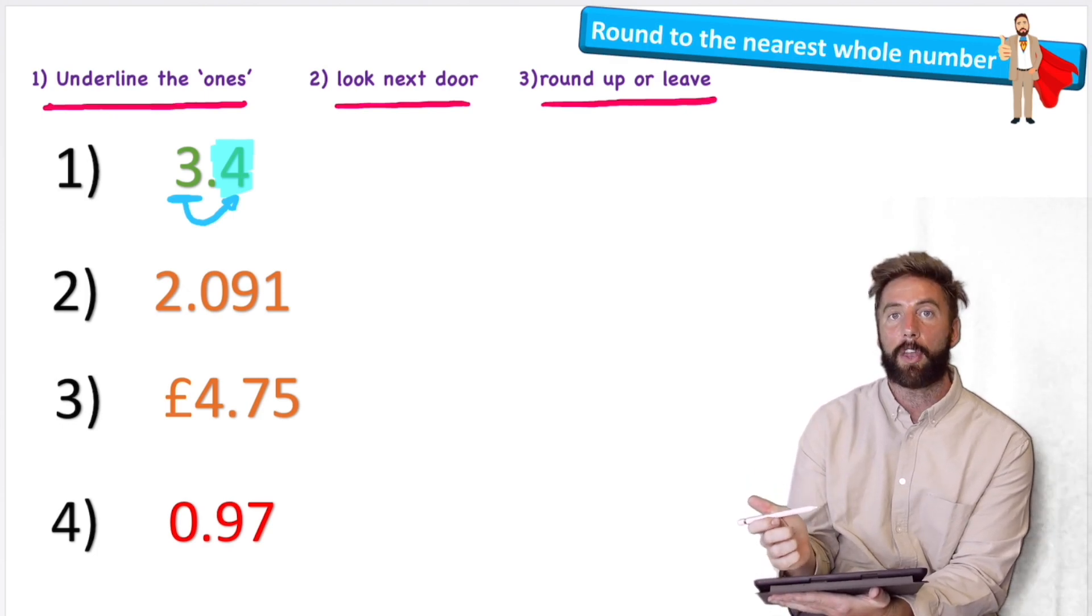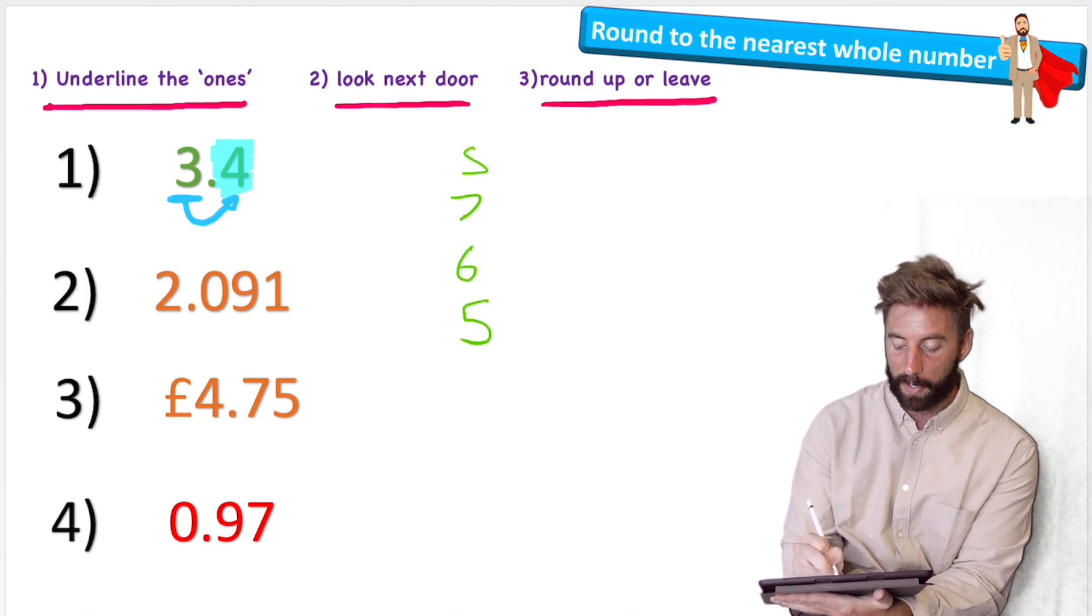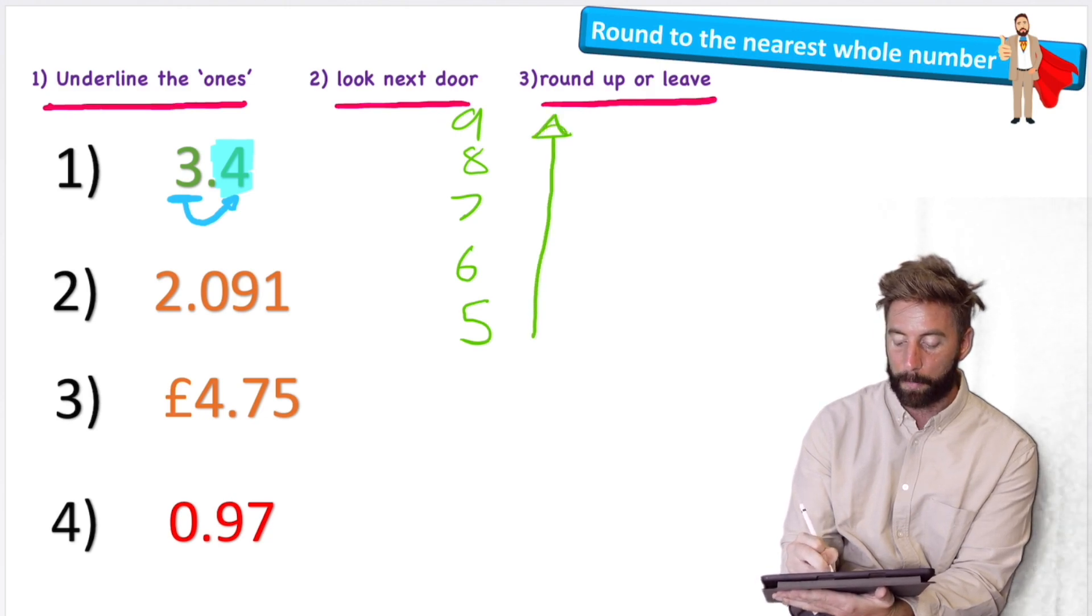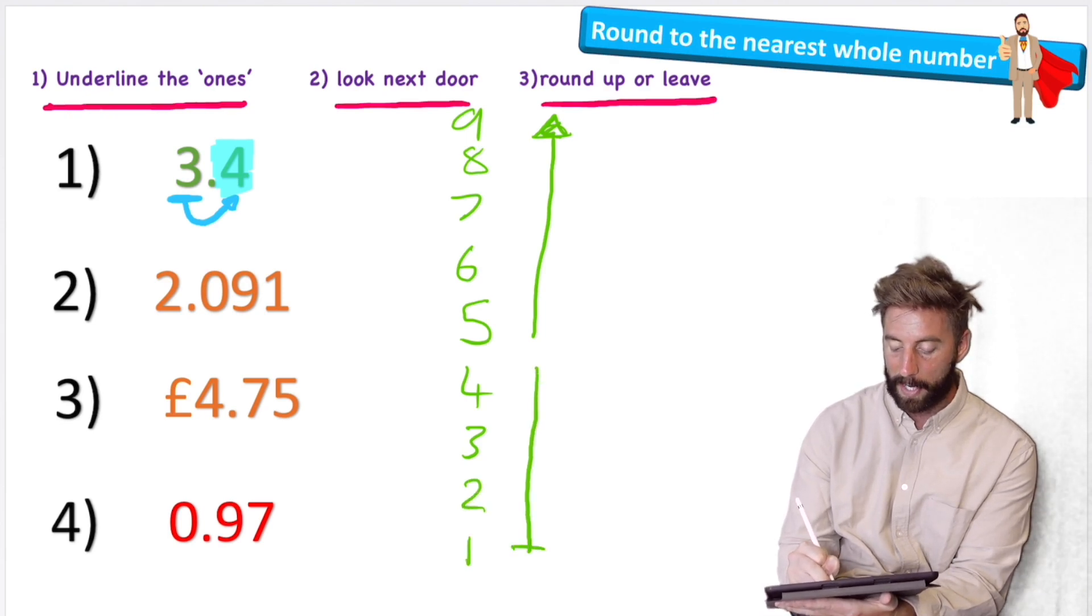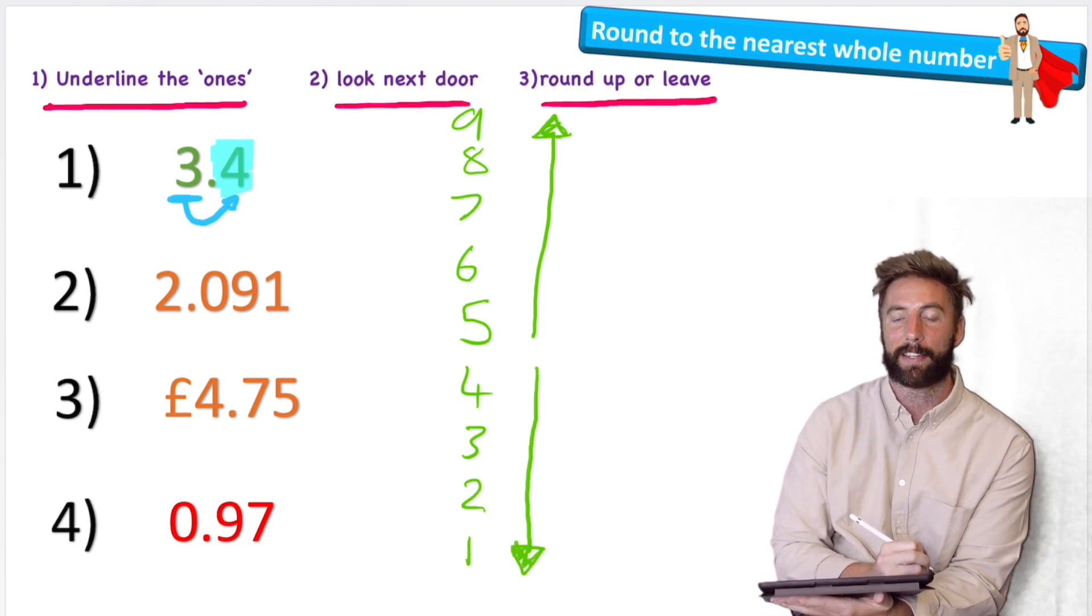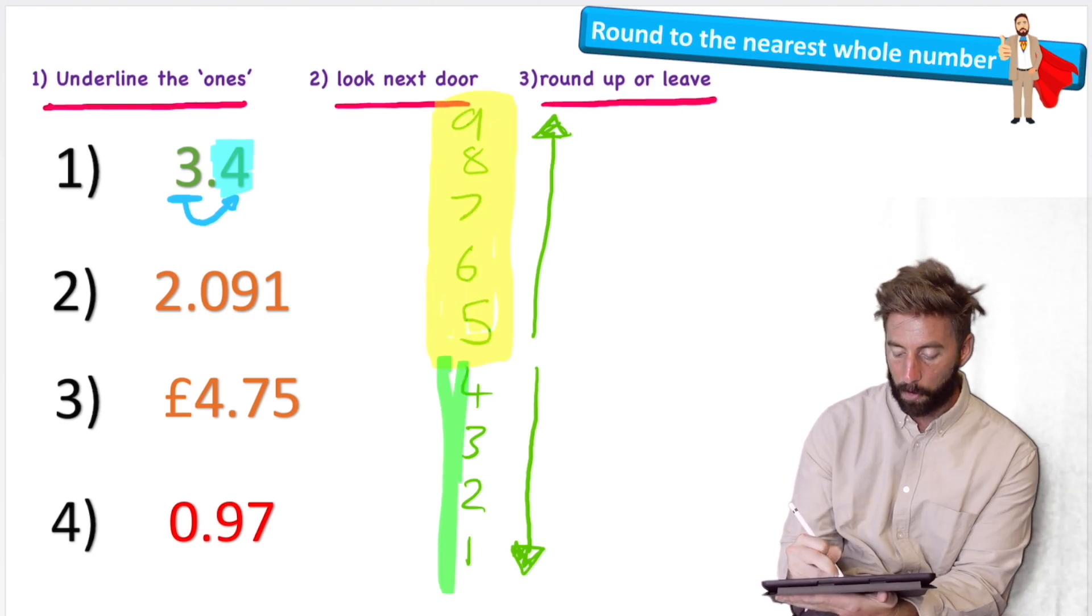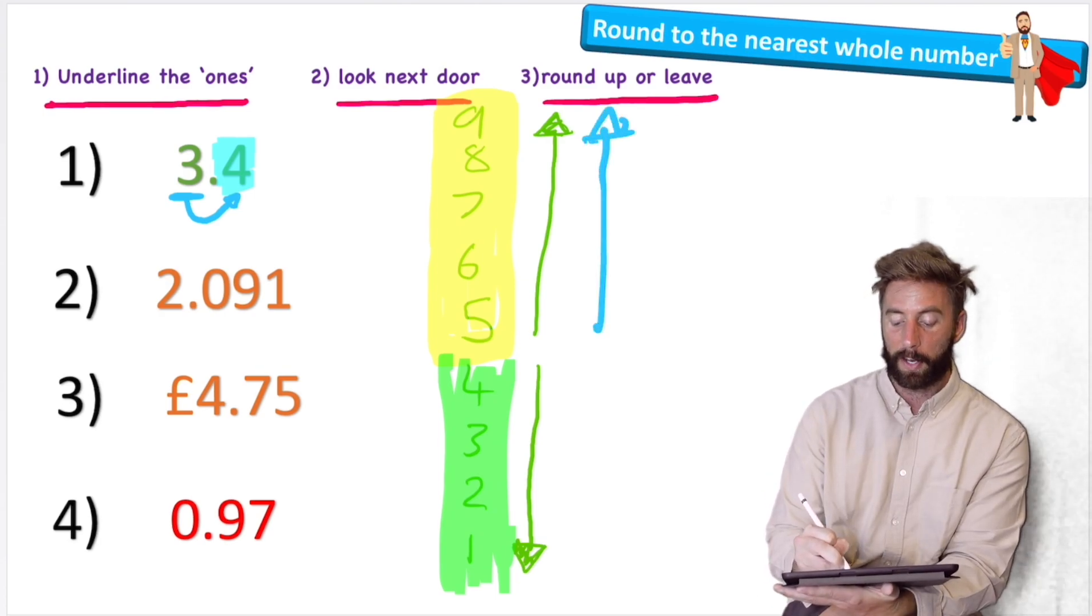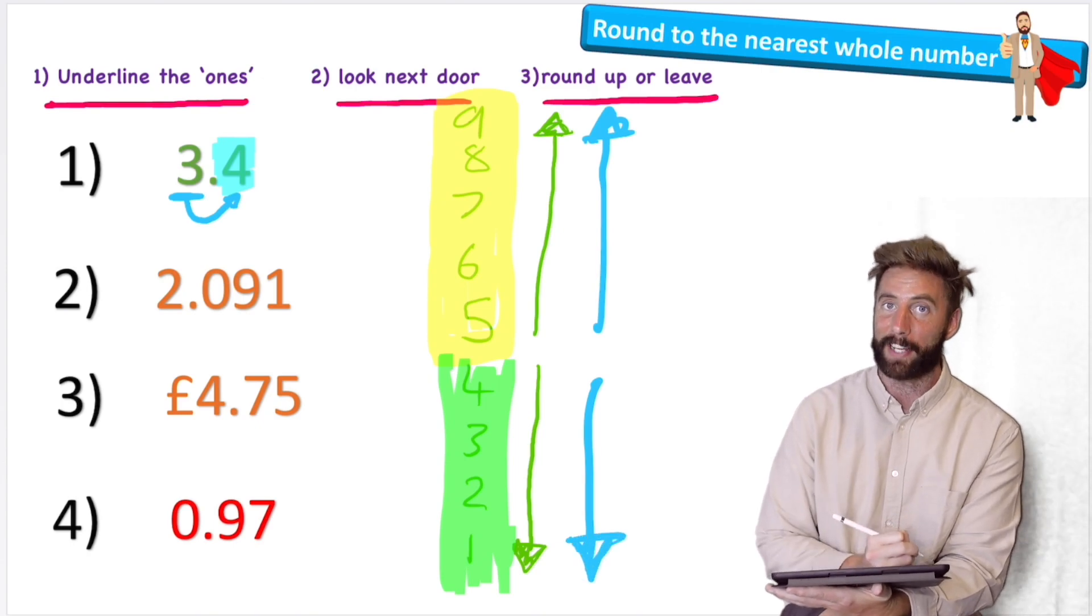Well, we have a system. If that number next door is a five, a six, seven, eight or nine, we always round up. However, if it's a four, three, two or one, we always keep it at the number it is. So nine, eight, seven, six, five, we round up. Four, three, two, one, we round down. Five or more, let it soar. Four or less, let it rest.